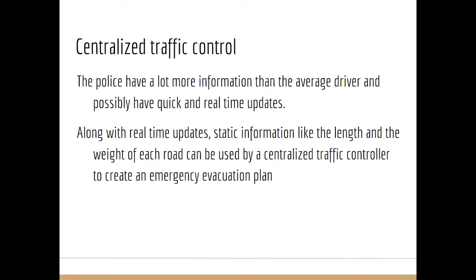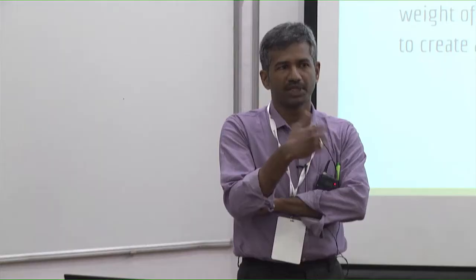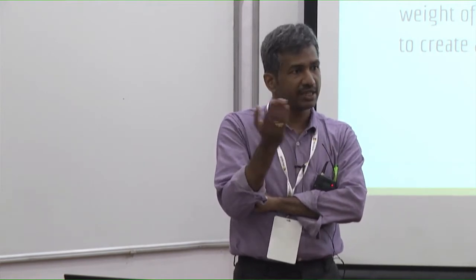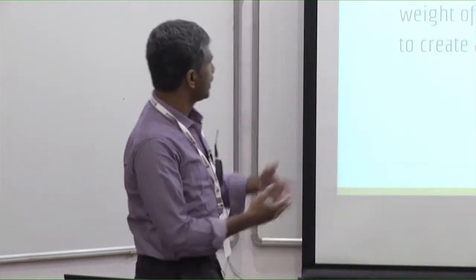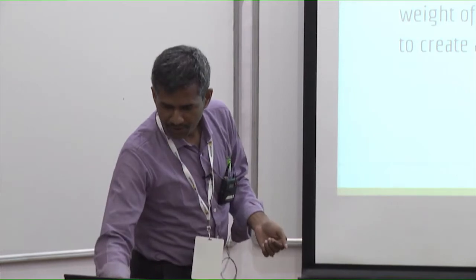The assumption is that police typically have a lot more information than the average driver, so the driver should be willing to follow police directions. But in today's world, with smartphones and so much information available, a good percentage of drivers may actually have real-time information. Therefore, they may not be compliant — they may optimize their own routes and not follow what the police tells them. That's the analysis we are performing here.